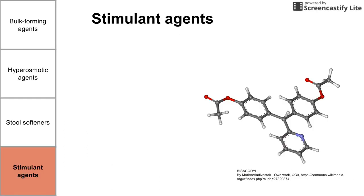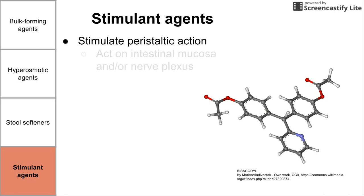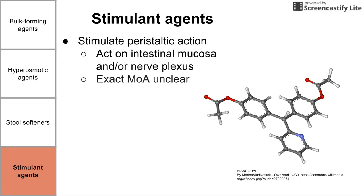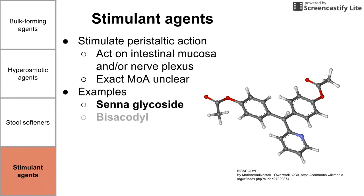Lastly, we have stimulant agents, which stimulate peristalsis by acting on the intestinal mucosa and/or the nerve plexi. The exact mechanism of action isn't entirely clear, but we know they increase peristalsis in the GI tract. Examples worth knowing are senoglycoside and bisacodyl — both stimulate the nerves in the GI tract to increase peristalsis and move stool through the colon. This has been a short video on laxatives and the different types.